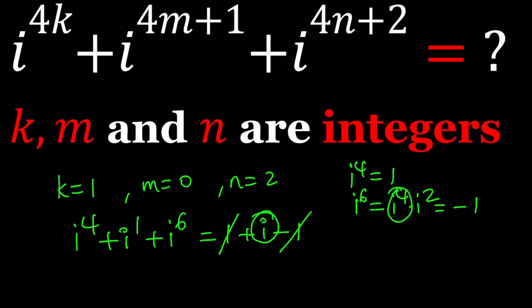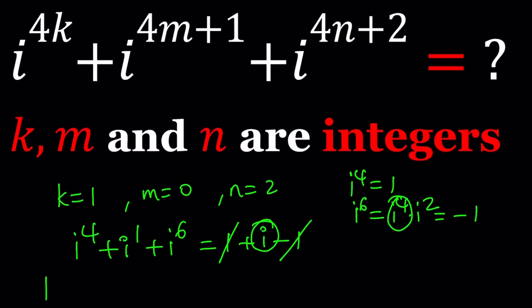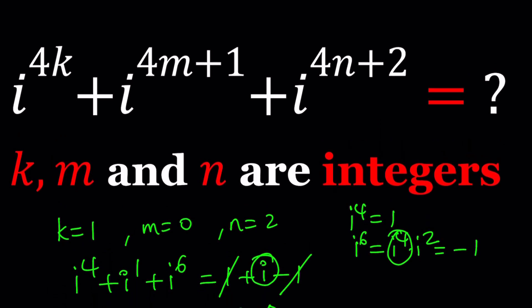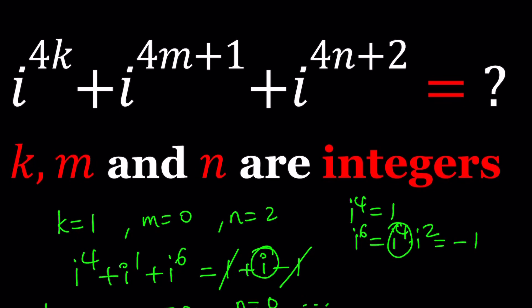But wait a minute. Do k, m, and n have to be all different? Probably not. So we could also plug in k equals 0, m equals 0, n equals 0, and then try to find the answer. What if we get different answers? Then there's a problem with this problem. But there shouldn't be a problem with this problem, so let's proceed differently.